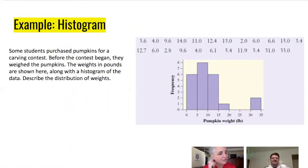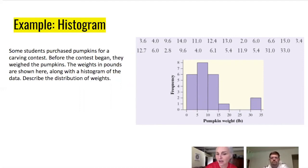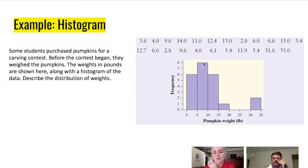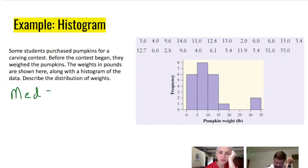Some students purchased a pumpkin for a carving contest and weighed them. Here's that distribution in pounds. For center, I'd go with the median. There are 23 data points, so I want the 12th value. Counting the frequencies: 6 in the first bar, and the next bar gets us to 14 — so the 12th value falls in there, making the median approximately 7 or 7.5 pounds. You could also say between 5 and 10.